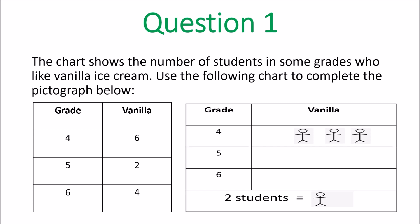Each stick person represents two students — so two, four, six. For grade five, how many would you need? Two of them like vanilla, so you only need one. And for grade six, four of them like vanilla — how many will you use? Two.